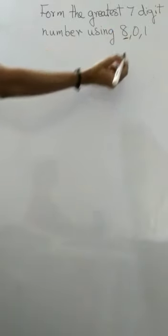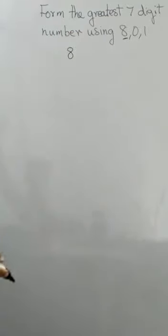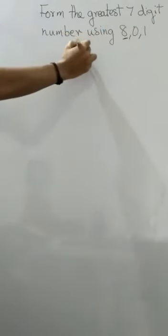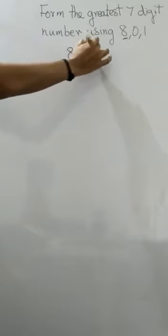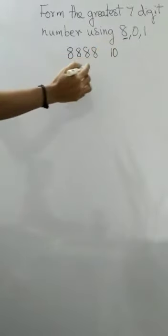Here the question is different. You have to form the greatest 7 digit number using 8, 0 and 1. So we have to use all these digits — 8, 0 and 1 — and form a 7 digit number that has to be the greatest. Which is the biggest number here? It is 8. You have only 3 numbers, so you can use 8 as much as you can, then put 1 and 0 at the end.